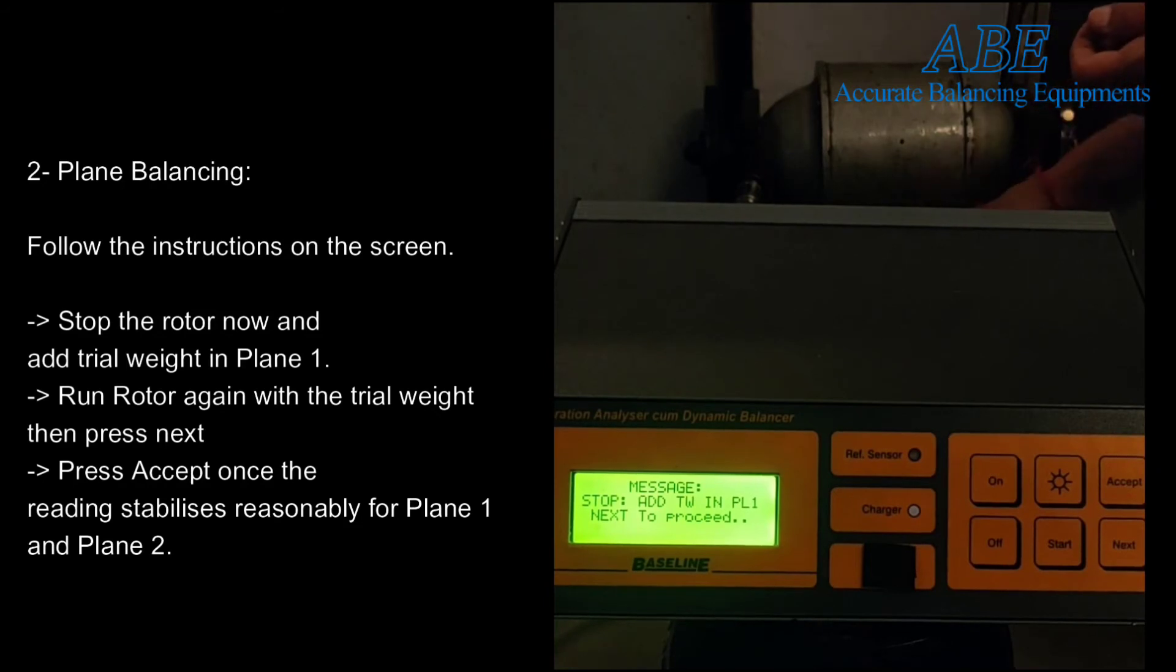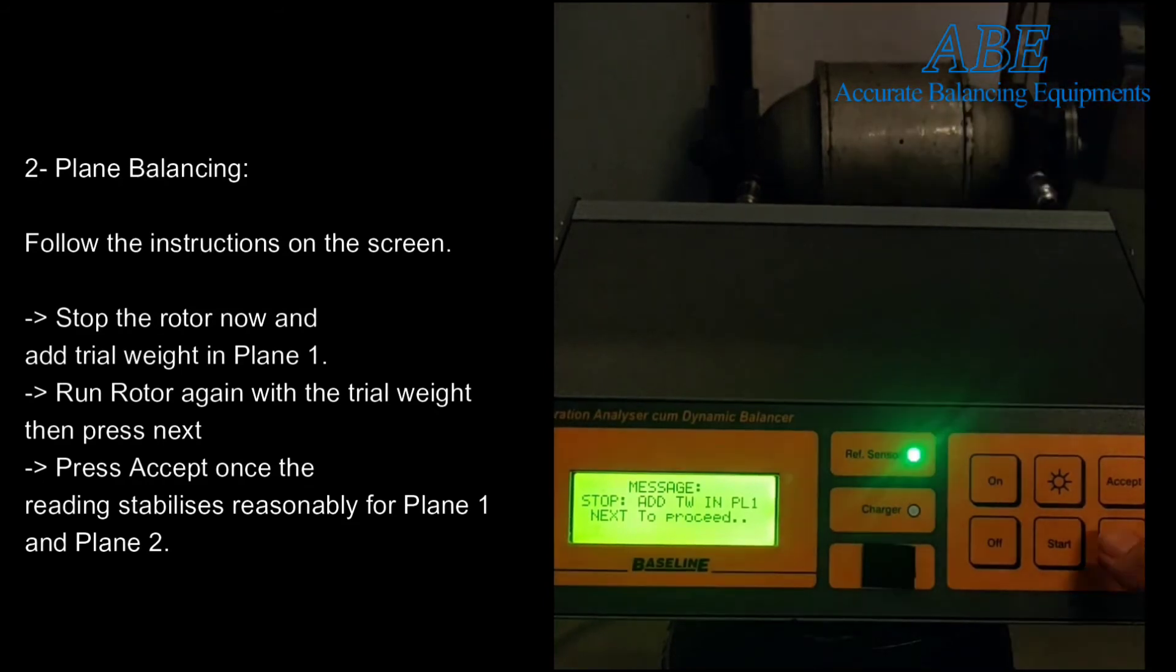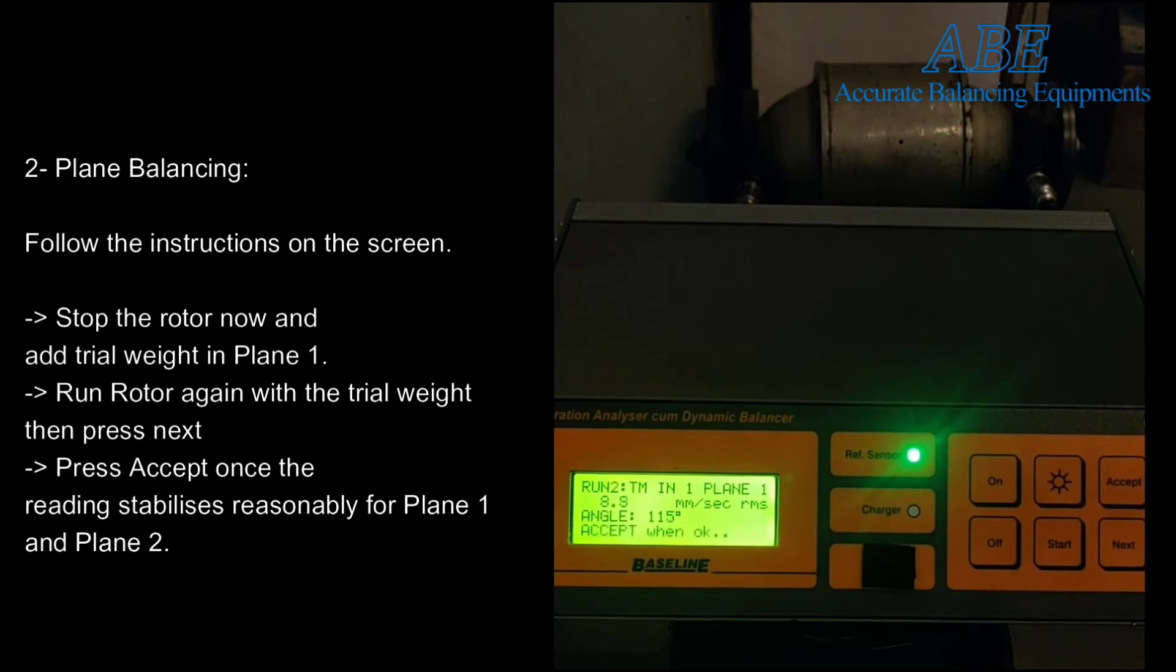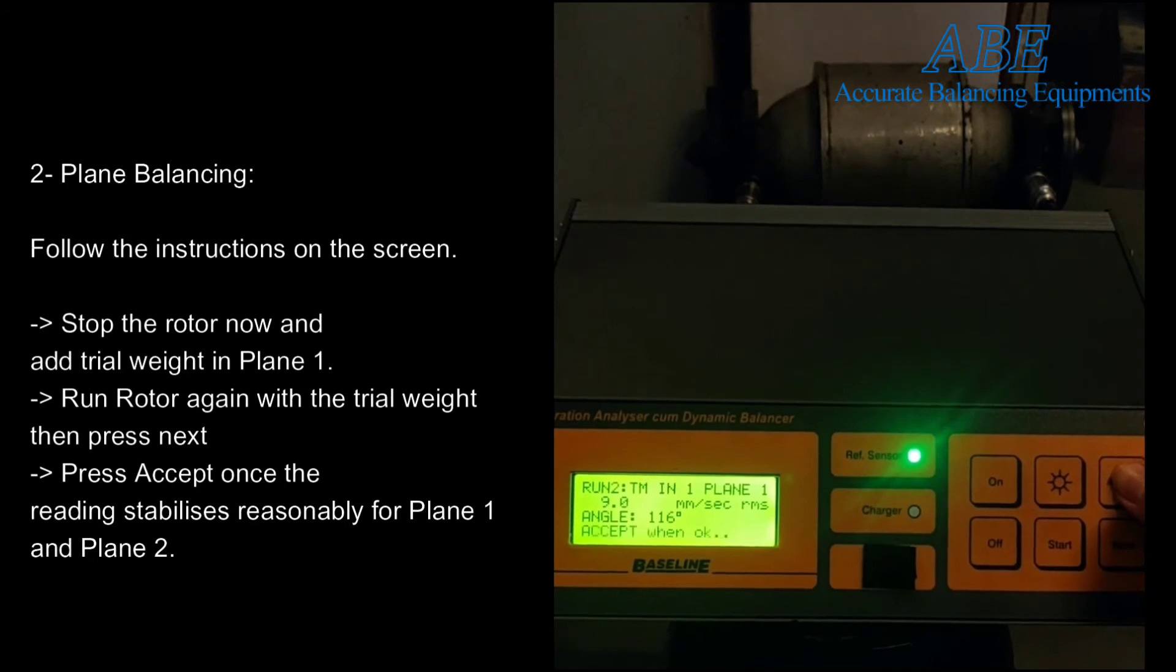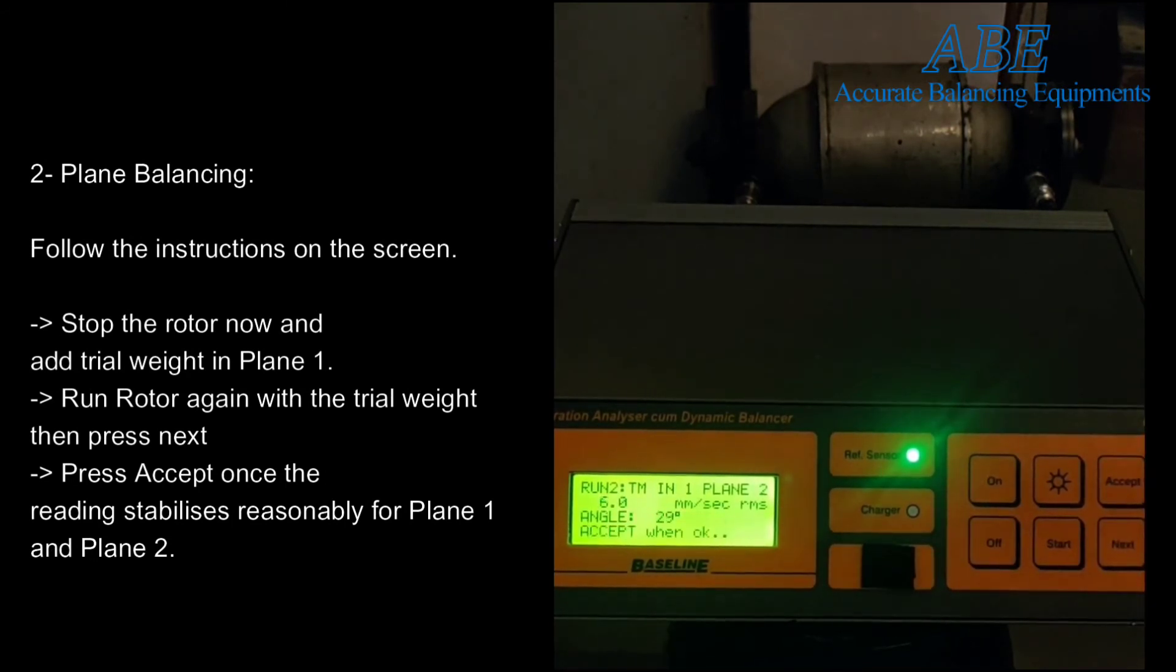After adding the trial weight in plane 1, run the rotor. The unit will then calculate vectors with the effect of the added trial weight in plane 1 and then in plane 2. After that, the unit will prompt you to stop the rotor. Remove the same trial weight from plane 1 and add it to plane 2. The unit will then calculate vectors for both the planes with the effect of the added trial weight in plane 2.